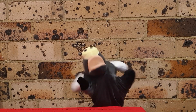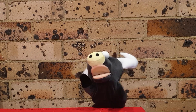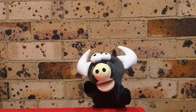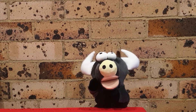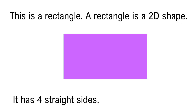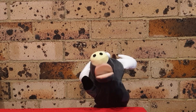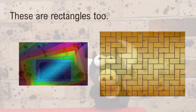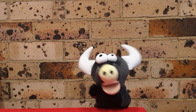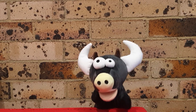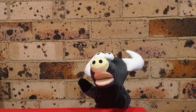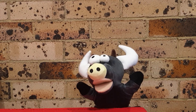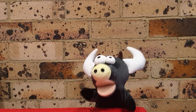This is a rectangle. It is a 2D shape. It has four straight sides. This is not a rectangle. It is not flat. It is a 3D shape, also known as a prism.